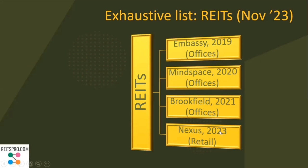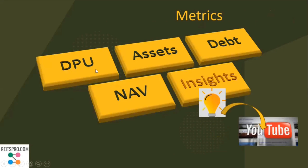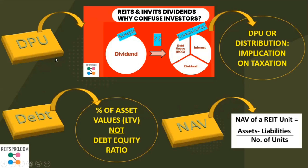There are three office REITs and one retail REIT. We will discuss these one by one on certain parameters. We will also have a video on InvITs soon, so do like and subscribe to encourage us. The metrics we will discuss today are the DPU or distributions, the assets the REIT has, the debt the REIT has, the NAV attributed to each unit of the REIT, and some additional insights. We will also refer to an earlier YouTube video to help you understand further.